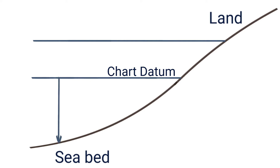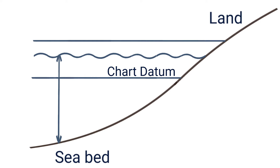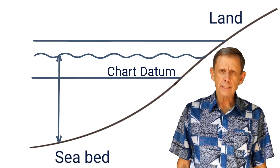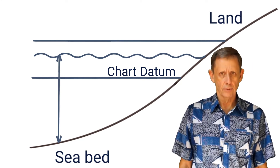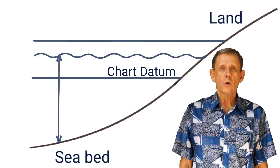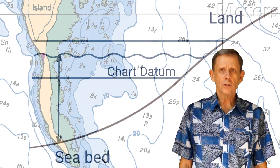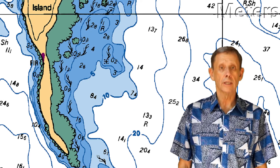Depths on all Canadian charts are given as meters below this level. At any given date and time, the actual water height will be somewhere in between the highest and lowest tide levels. The heights of tides in the tides and currents tables are given as meters or feet above chart datum. So to determine the depth of the water at any location on a given date and time, you look up the tide height in the tides and currents tables for that date, time, and location, and then add it to the depth published on the chart. In the next lesson, we'll look at the details of how to use these tables. For this lesson, we're only looking at the information given on charts.